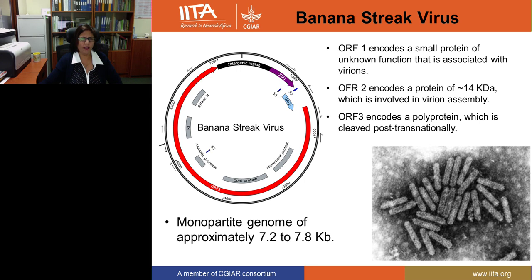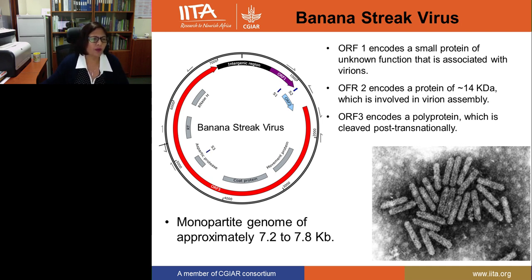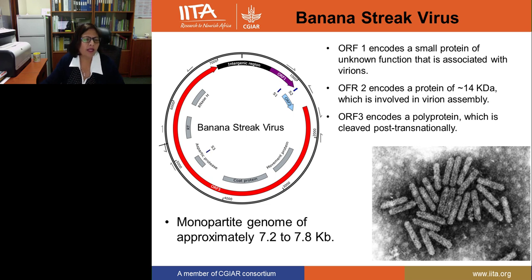In banana streak virus there are three open reading frames. Open reading frame one encodes a small protein of unknown function associated with virions. Open reading frame two encodes a protein of about 14 kilodaltons, which is involved in virions. Open reading frame three is the most important because it encodes a polyprotein with post-transcriptional processing. It encodes movement protein, coat protein, protease, RNase H, and reverse transcriptase. The genome is approximately 7.2 to 7.8 kilobases.